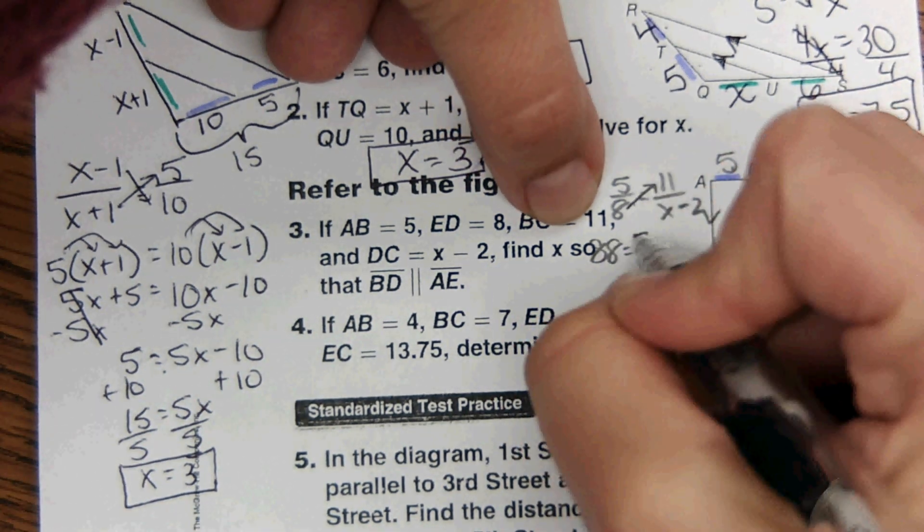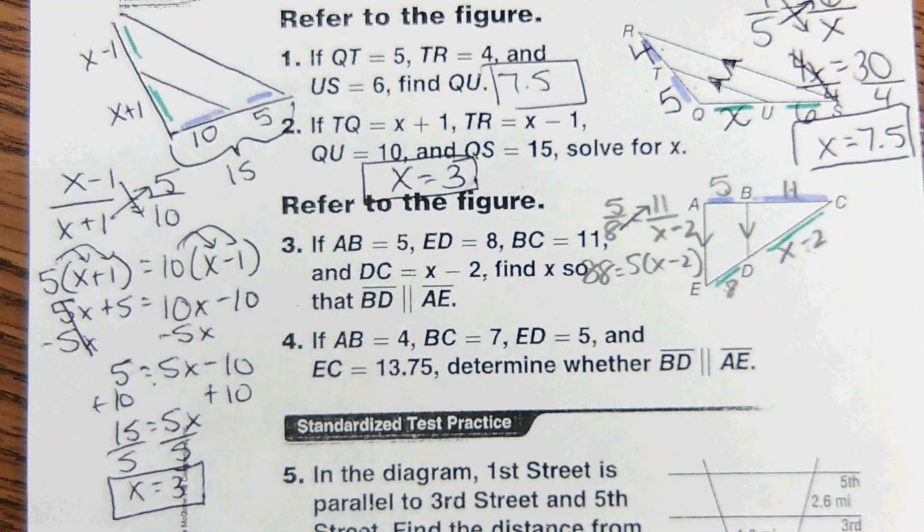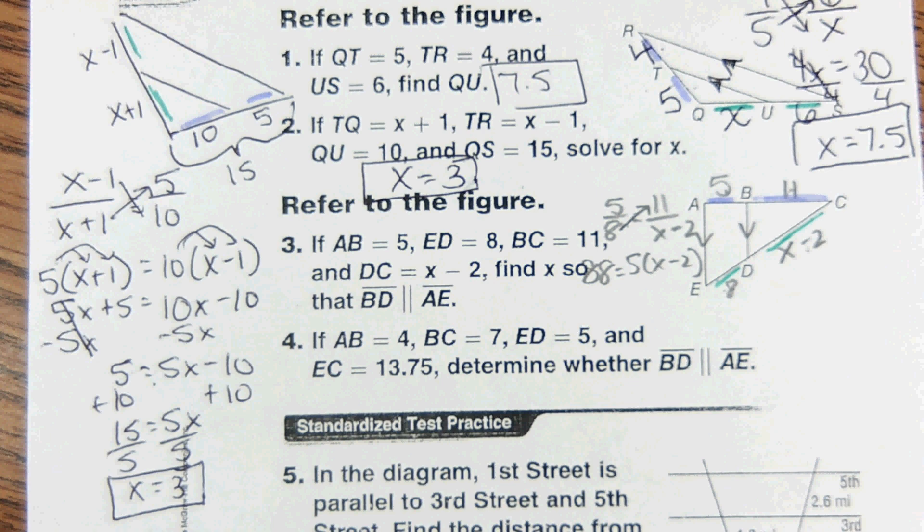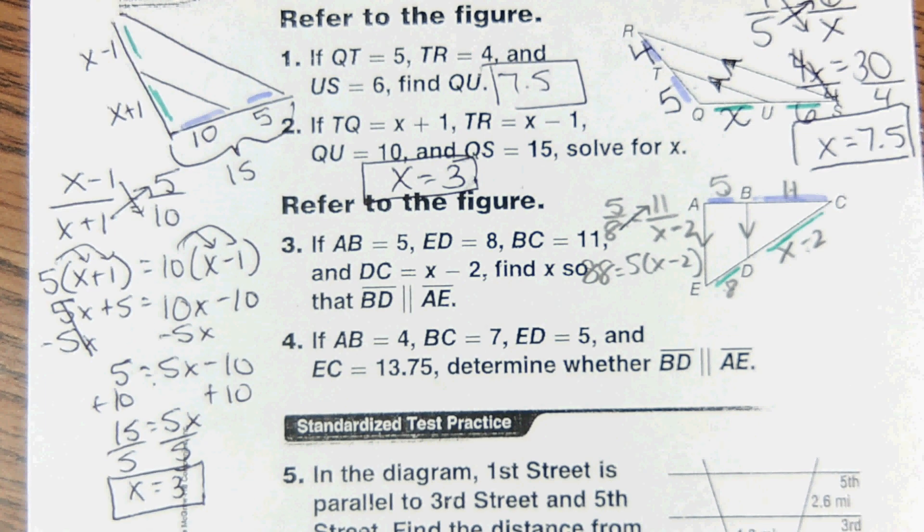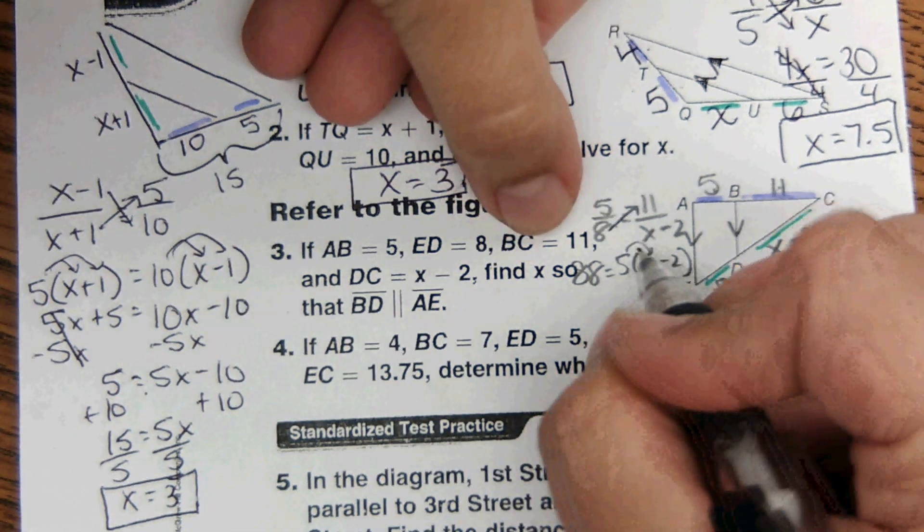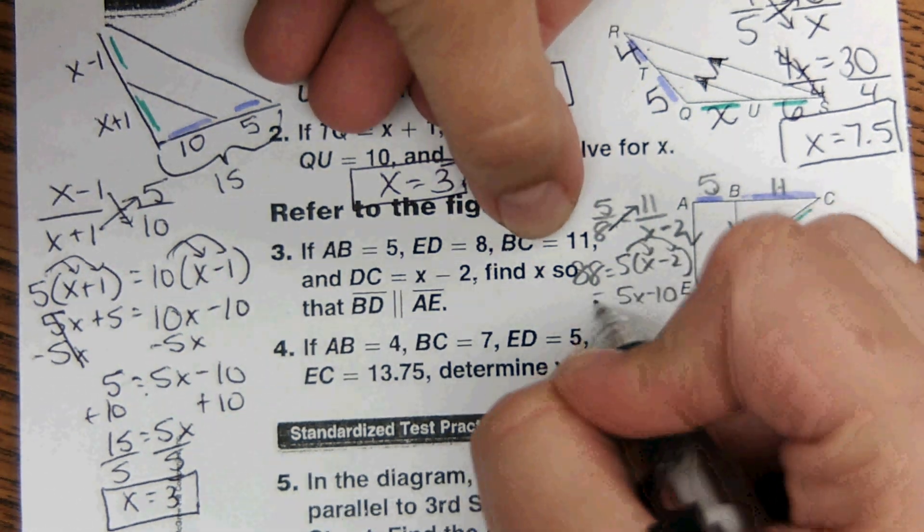And then 8 times 11 is 88, and then 5 times x minus 2... Distribute: 5x minus 10.